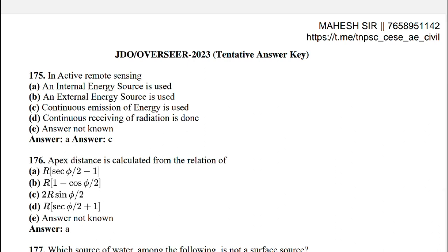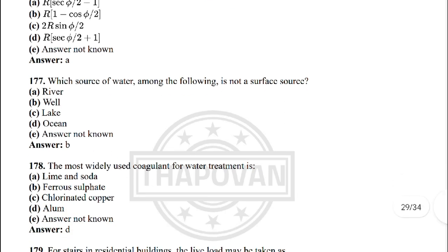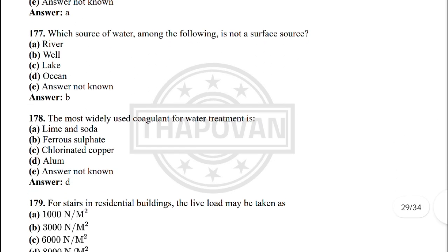Next: in passive remote sensing — the correct answer is option C: continuous emission of energy is used. Next: apex distance is calculated from the relation — R × (sec(Δ/2) − 1).